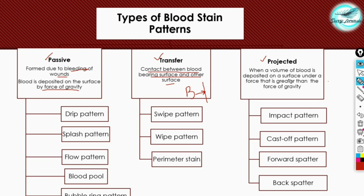The third type is projected blood stain patterns. Basically, when a volume of blood is deposited on a surface under a force greater than the force of gravity, another force is acting — such as arterial pressure force — which the blood experiences. That is also a type of projected blood stain pattern. These main blood stain patterns also have subdivisions.